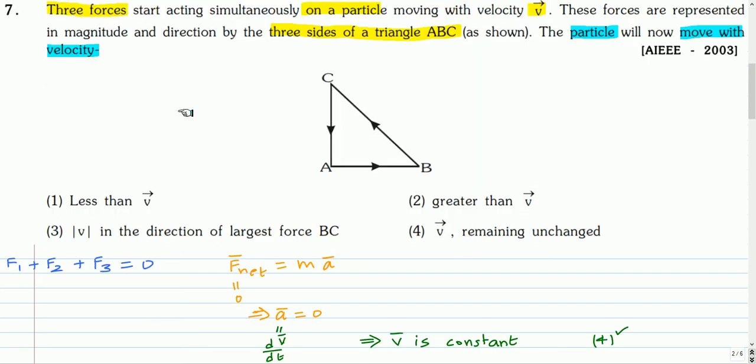This is the next question. Three forces start acting simultaneously on a particle moving with velocity v. These forces are represented in magnitude and direction by three sides of a triangle ABC. The particle will now move with velocity.